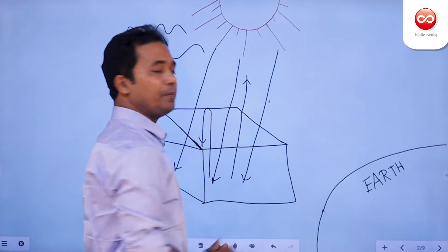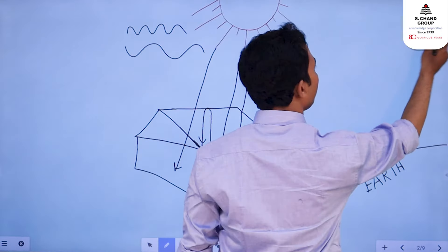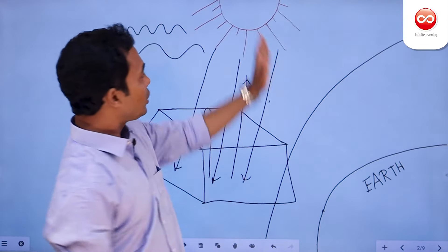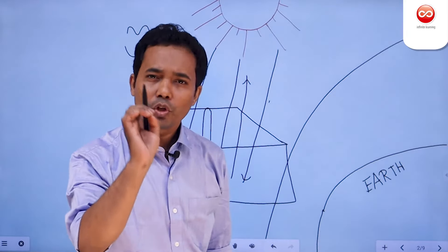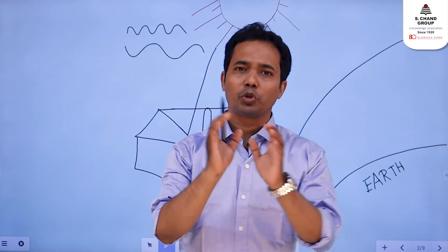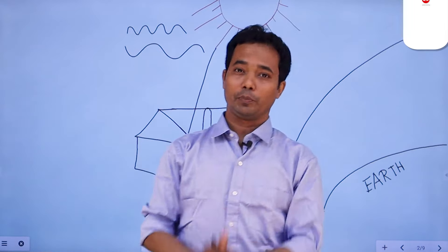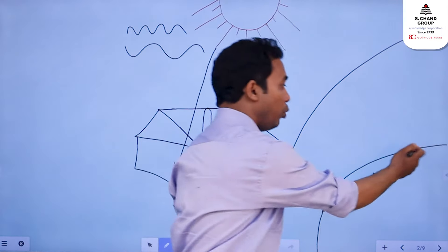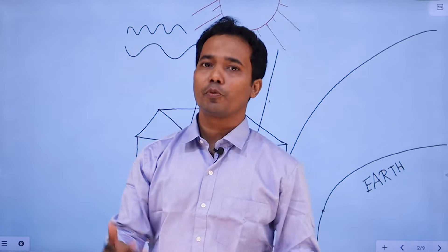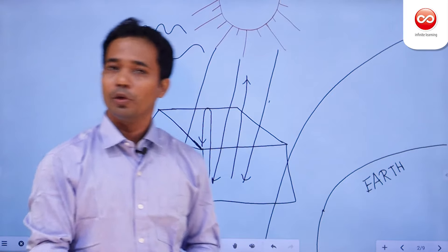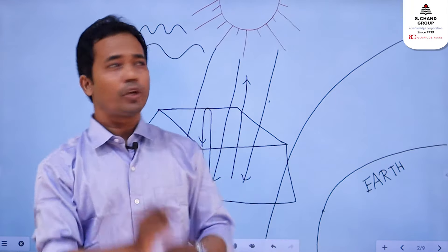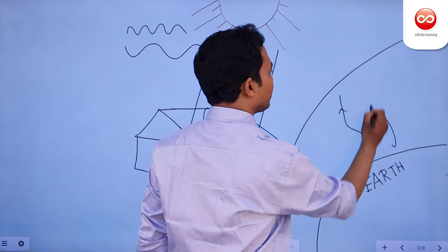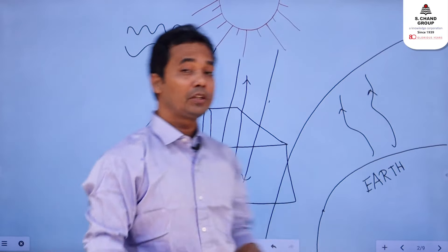On Earth's surface, the sun's heat rays that come up are radiated. The atmosphere absorbs these heat waves. Now you'll see that the amount of toform is very big. And when the amount of toform increases, it will be a big amount.